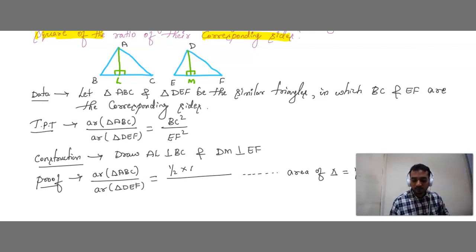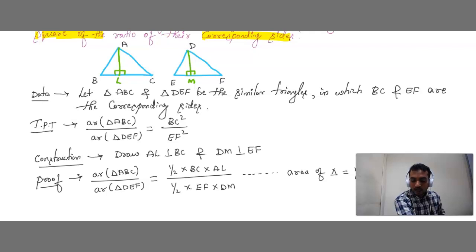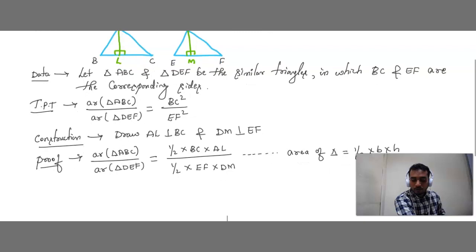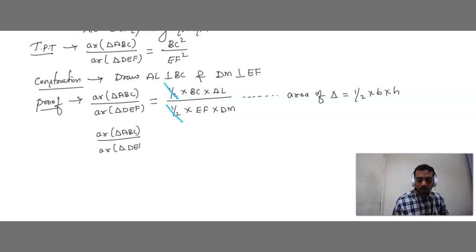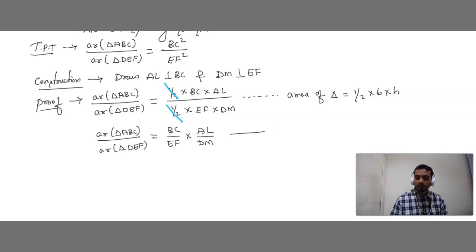In Triangle ABC, base is BC and height is AL. In Triangle DEF, base is EF and height is DM. So Area(ABC) / Area(DEF) = (½ × BC × AL) / (½ × EF × DM). The halves cancel, giving us BC / EF × AL / DM. Let this be Equation 1.